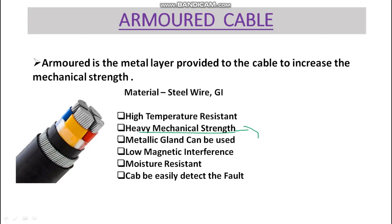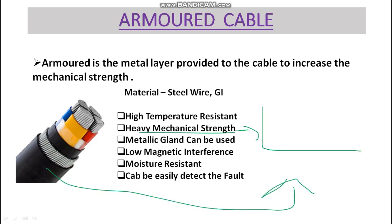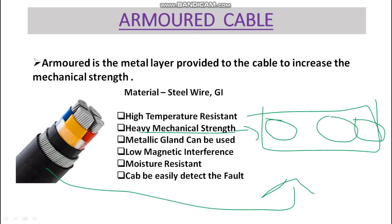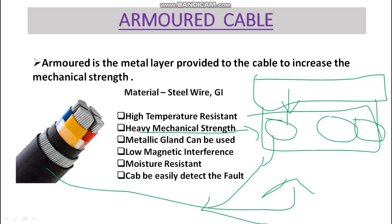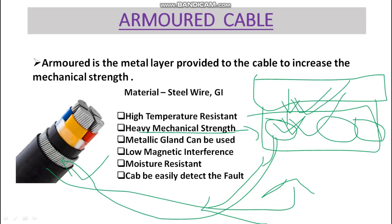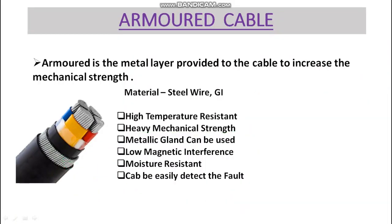Another major advantage is heavy mechanical strength. This is the most important advantage. We commonly use armored cable for underground installations. During maintenance, excavation, or digging above the cable, if any equipment — such as an excavator or spade — hits the cable, the armor protects it from damage.